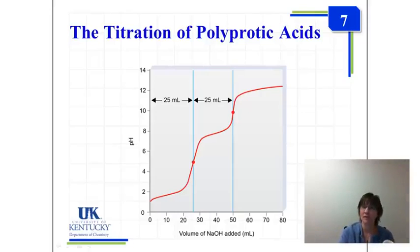Our seventh learning objective is dealing with polyprotic acids and looking at the titration curve of these polyprotic acids. Polyprotic means you have more than one proton that can be donated from this acid.